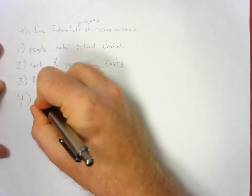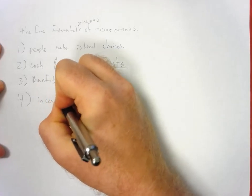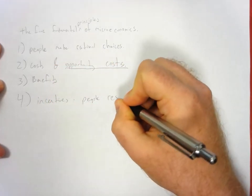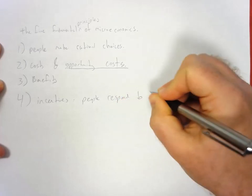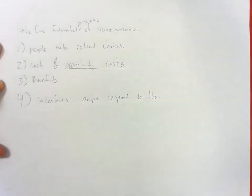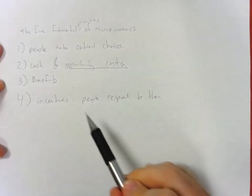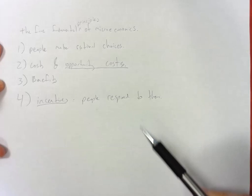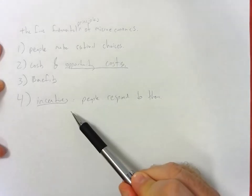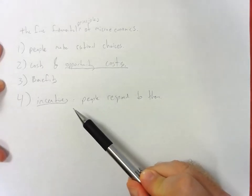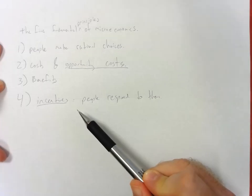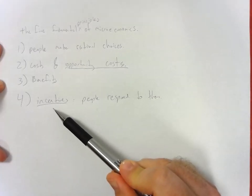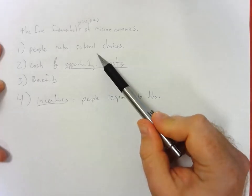Four. Incentives. And people respond to them. So, incentives are very important in economics, because we assume that incentives drive behavior. If people were truly not rational, then incentives wouldn't matter. But the reason we have laws and punishments, and that we pay people to go to work, is because we believe that people respond to incentives, and that they're rational.